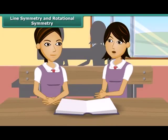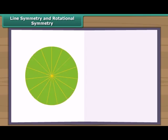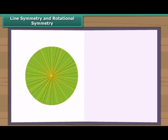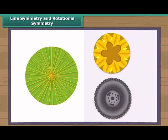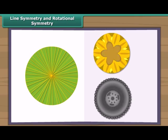Do you know which is the most perfect symmetrical figure? Is it the circle? Yes, the circle is the most perfect symmetrical figure. It can be rotated around its center through any angle, and at the same time it has an unlimited number of lines of symmetry. Every line through the center forms a line of symmetry, and it has rotational symmetry around the center for every angle.